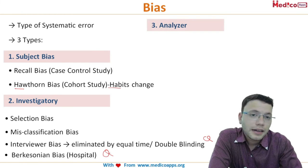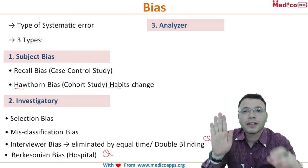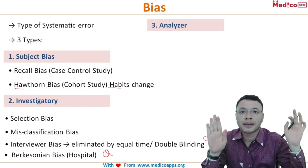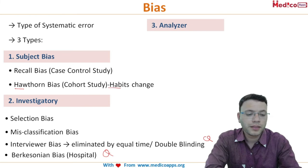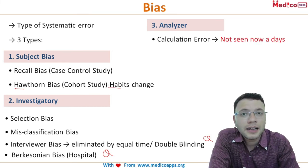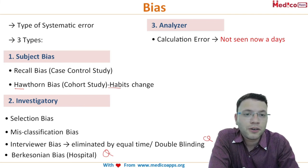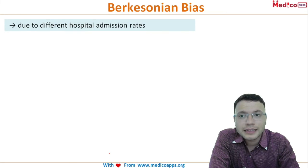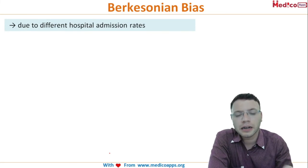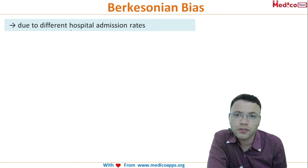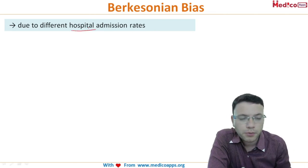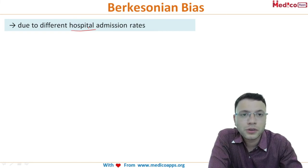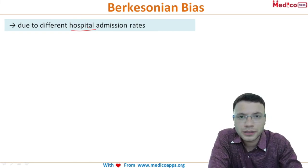In a study we have the subject, the interviewer, and the analyzer (statistician). Calculation errors by the analyzer are rarely seen now due to the use of statisticians. Berkson's bias arises from different hospital admission rates across departments — studies done in hospital settings are prone to this bias. All these biases occur more commonly in case-control studies.